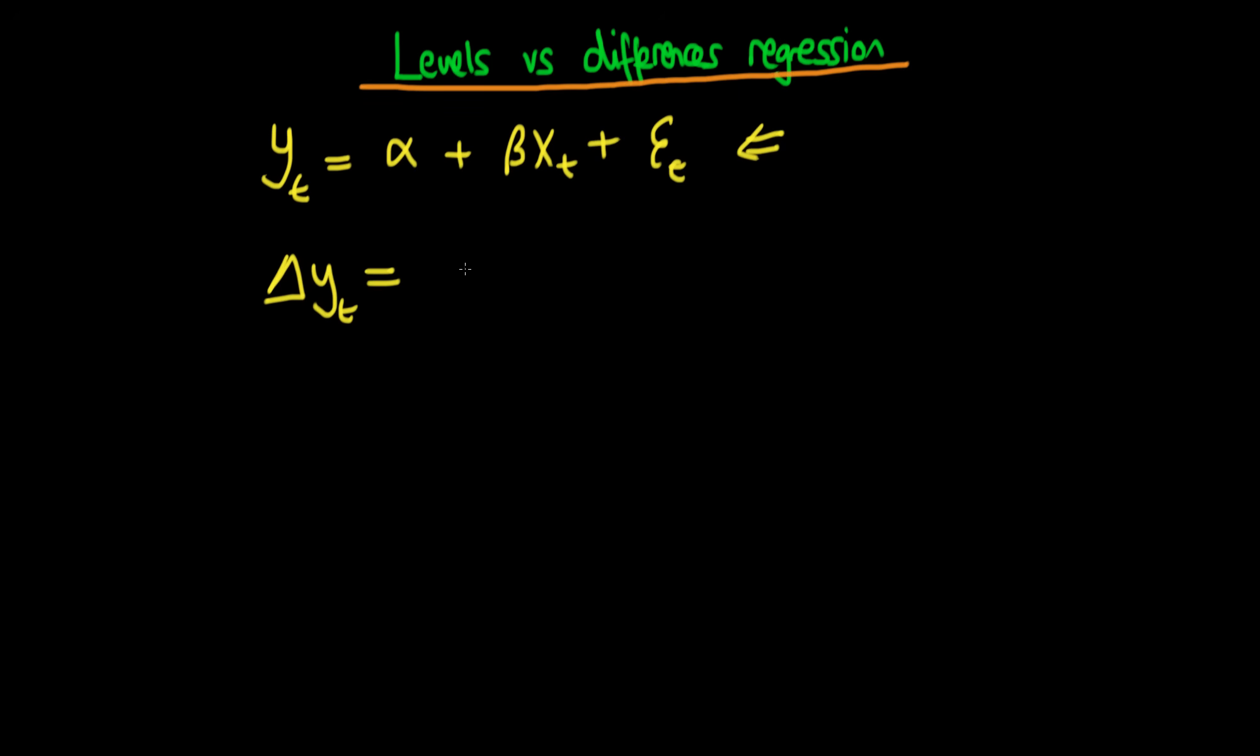So the idea here is that the change in y would be equal to some constant delta times the change in xt plus some error ut. This is a regression which uses the first differences of the variables rather than using the levels of the variables.